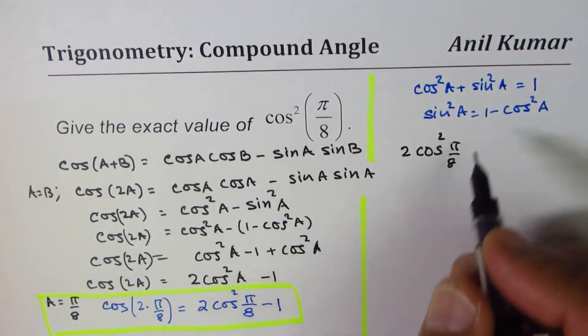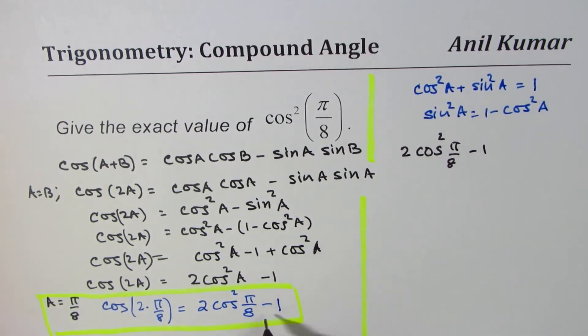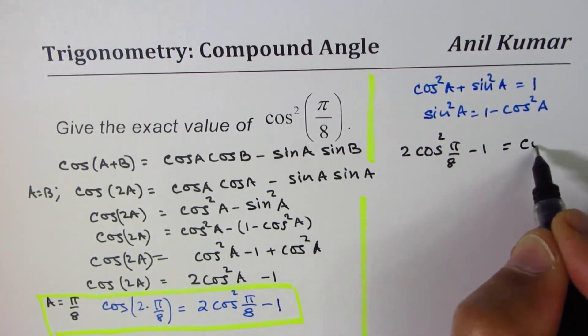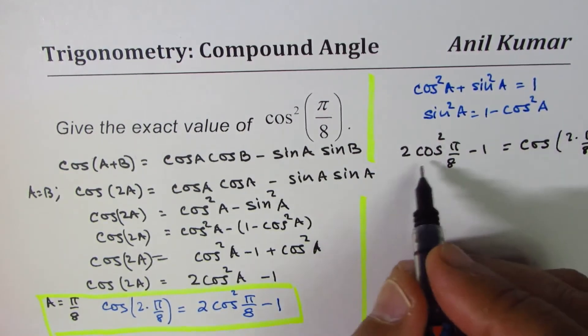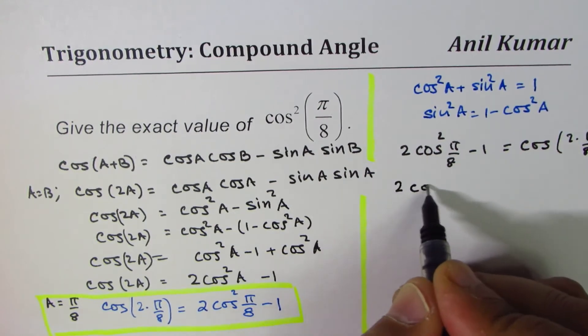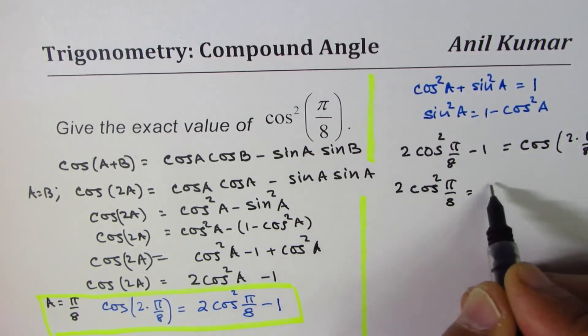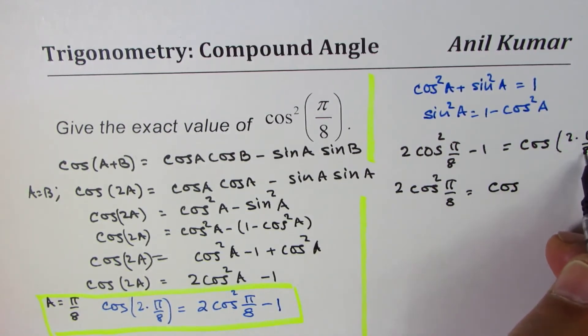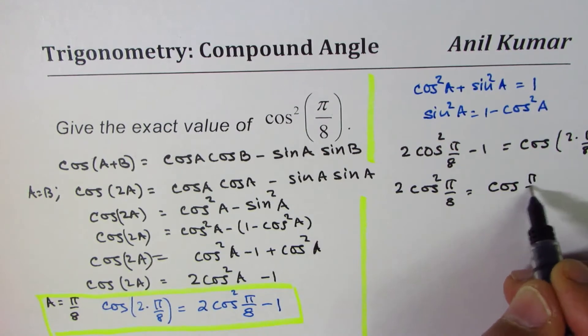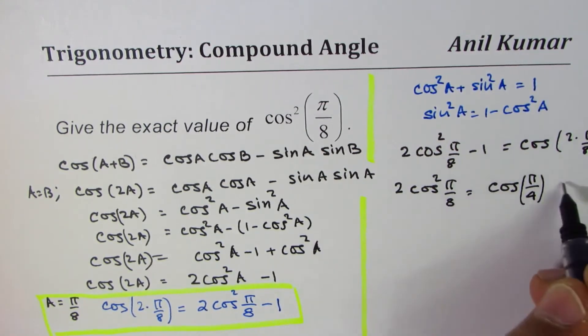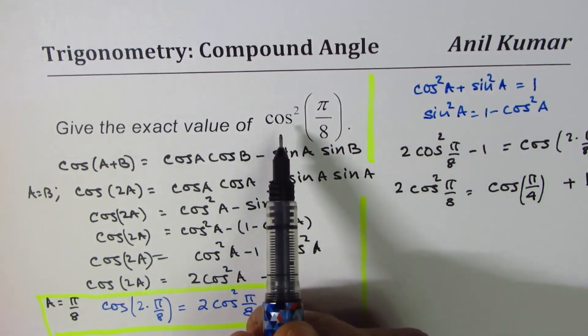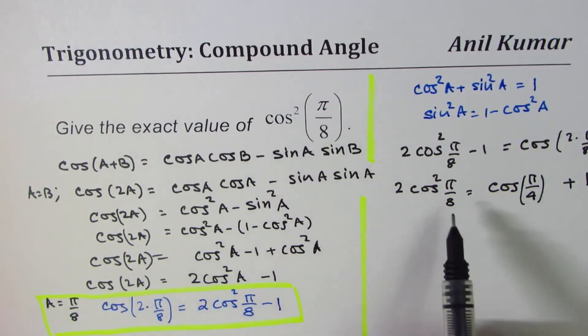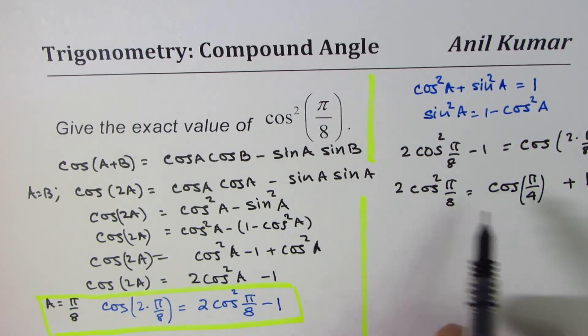Let me rewrite this first and then we'll do the needful. I'm writing this on the right side equals cos(2 × π/8). Now we can say 2cos²(π/8), taking one to this side, equals cos(π/4) plus 1. Do you see that?